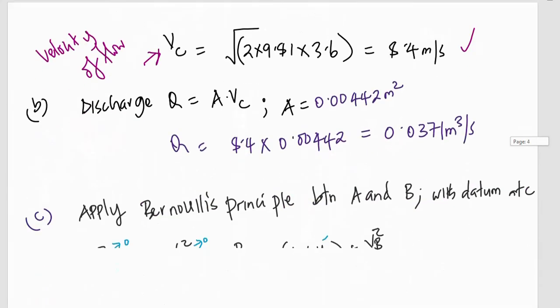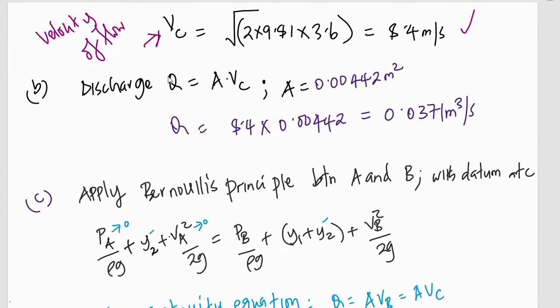Now, we've got part B of this problem. We want discharge. Discharge is equal to Q and is equal to area times velocity. Remember, we are discharging at C. So, it will be area of cross-section times velocity at C. Area is already given, is calculated as 0.00442 meters squared. Then, it means discharge will be the velocity 8.4 times the area and this will give me 0.0371 meters cubed per second as the discharge of the liquid flowing through the siphon.